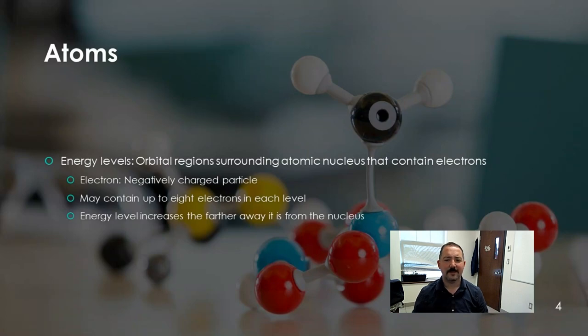Speaking of electrons, these guys like to float around the nucleus in pairs, directly opposite each other. These negatively charged particles space themselves out as much as possible. When there's only a few, they'll stay really close to the nucleus, but as more join, the new ones will orbit further away from the nucleus. We call these different levels of orbit energy levels.